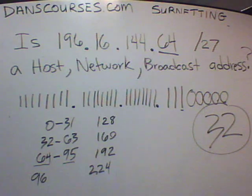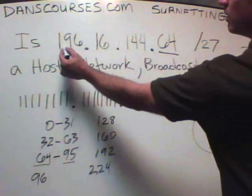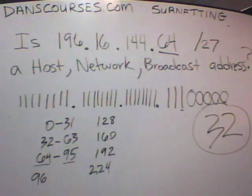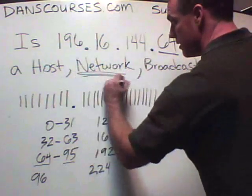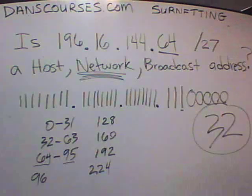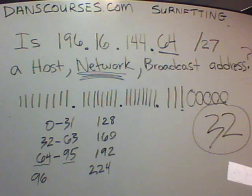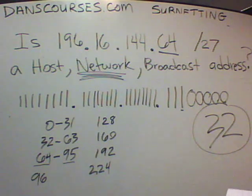So in this scenario, this number — 196.16.144.64 — is a network address. You guys got it? That makes it easy, right? Should we do another one? Absolutely, let's do it in the next video.